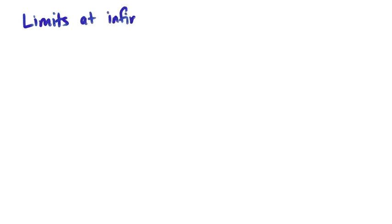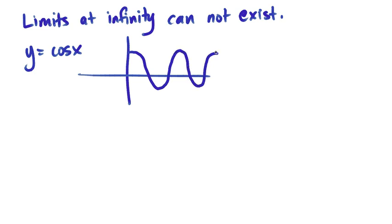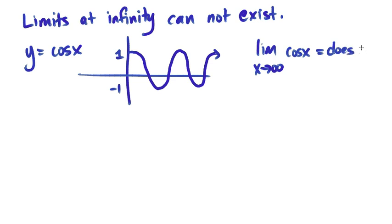Also, limits at infinity — either positive or negative infinity — can fail to exist. We can see that through an example like y = cos(x). The cosine graph oscillates between positive 1 and negative 1 and keeps doing that oscillation. For this, we would say the limit as you approach positive or negative infinity of this function does not exist.